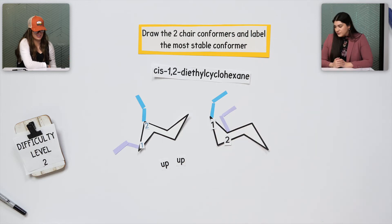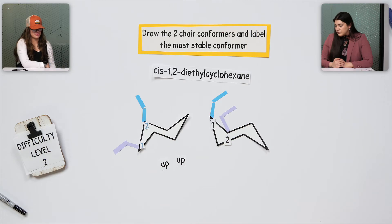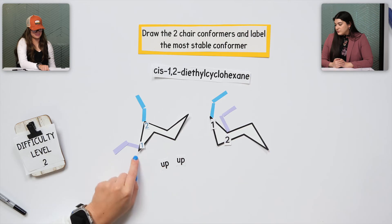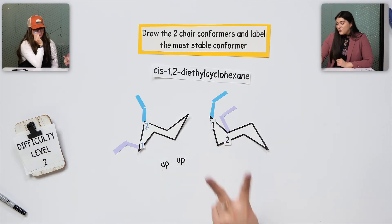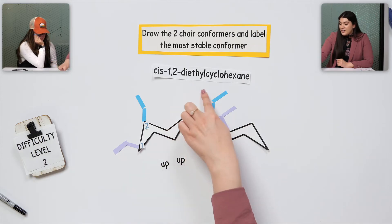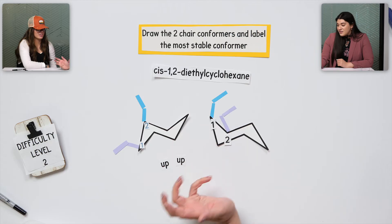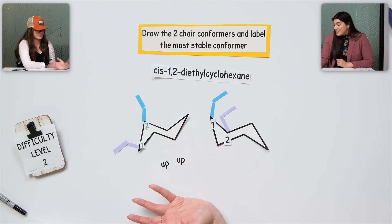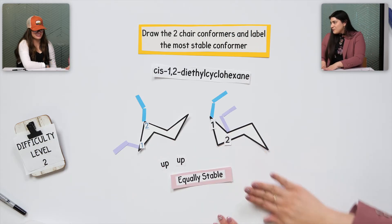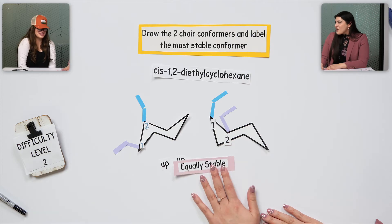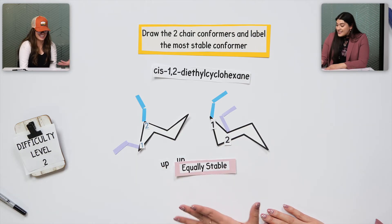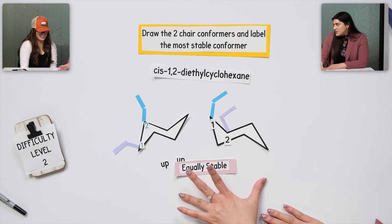Which one is the most stable? I don't remember how to tell because they both have equatorial and they both have axial. Is there a substituent that is larger than another? Actually — aren't they both the same? Exactly. Because it's CH2-CH2 — two carbons, right? And it's diethyl, meaning there are two ethyl groups. So because they're basically tied, they're equally stable.